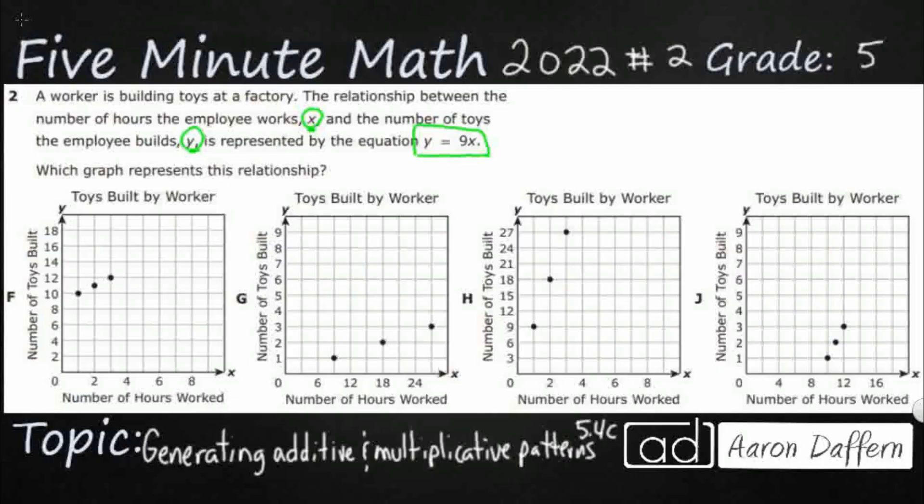Okay, so what we need to do is we need to create, if we've got y equals 9x, then we need to create some coordinate pairs. And let's just start. So what we do is we start with our x. So we're going to substitute in a value for x. That is our independent variable. That's where we start.